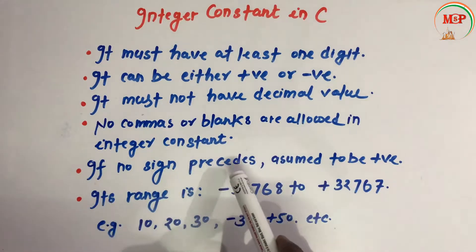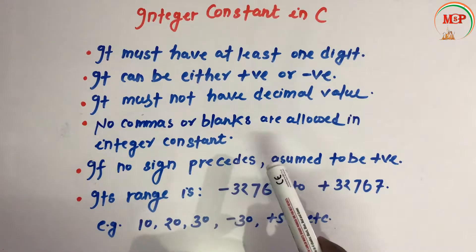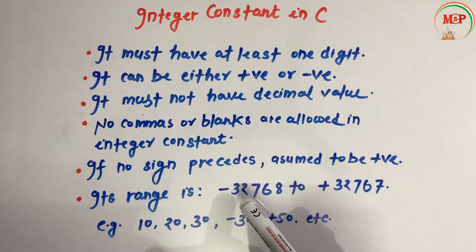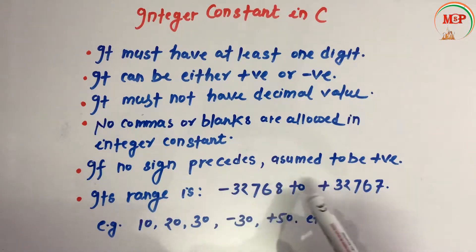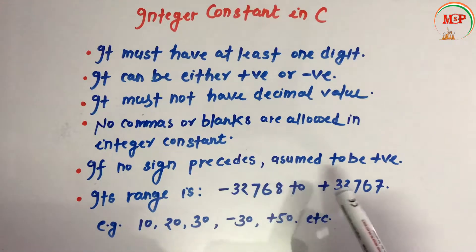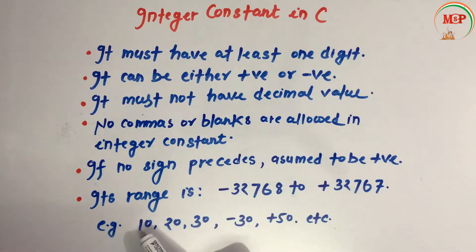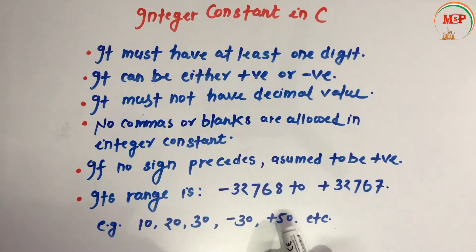If no sign precedes, assume it to be positive. Its range is -32768 to +32767 — the integer constant value must lie within this range. For example, 10, 20, 30 are positive constants, and -30 is a negative constant.